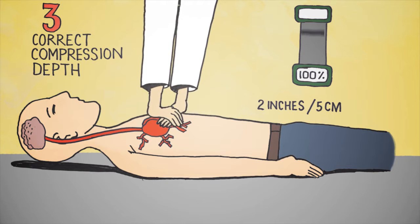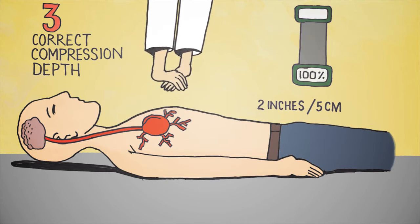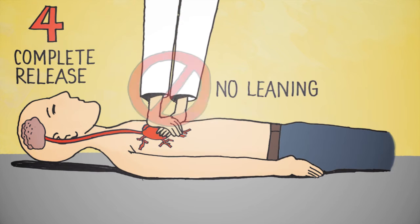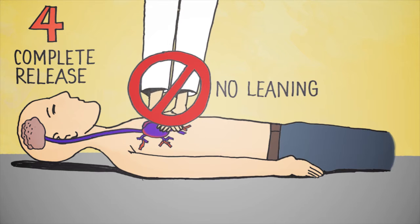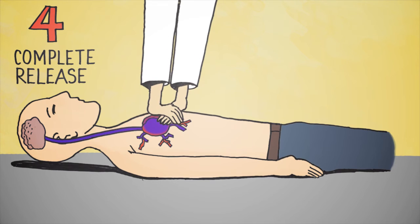On the way down, compressions force blood from the heart into circulation, and most importantly, to the brain. On the way up, full release allows the heart to refill before the next compression.